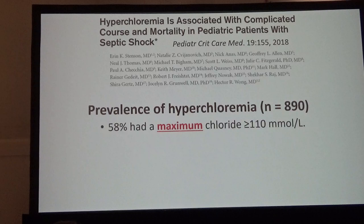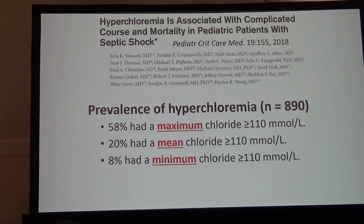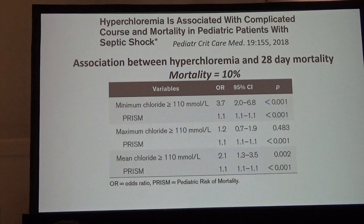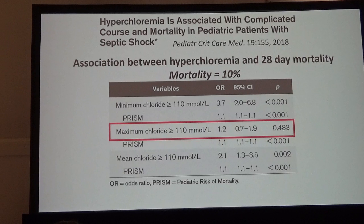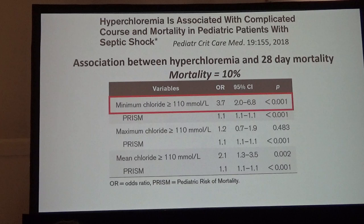Interestingly, a majority of these children — at least at one point — had a maximum chloride greater than 110, so it was pretty prevalent. About a fifth of them, on average, had high chloride levels. And remarkably, almost 10% had a minimum chloride greater than 110, meaning that throughout their entire initial seven days in the ICU, they had hyperchloremia at all times. The overall mortality was 10%. If your mean chloride was higher than 110, there was an association with mortality. And if your minimum chloride was greater than 110 throughout the entire time, the association was even stronger.